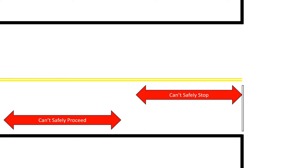We don't want too large of a gap between those areas, because some drivers when they see yellow will stop no matter what, while other drivers will be more aggressive and try to make it through. If that gap is too large, you may have a mismatch between driver expectations — some see yellow as a reason to stop no matter what, others will try to proceed. So we don't want too large a gap, but most importantly, we don't want these zones to overlap and create a dilemma zone.